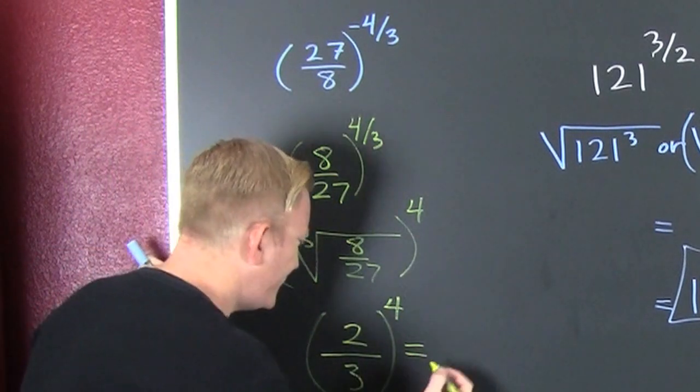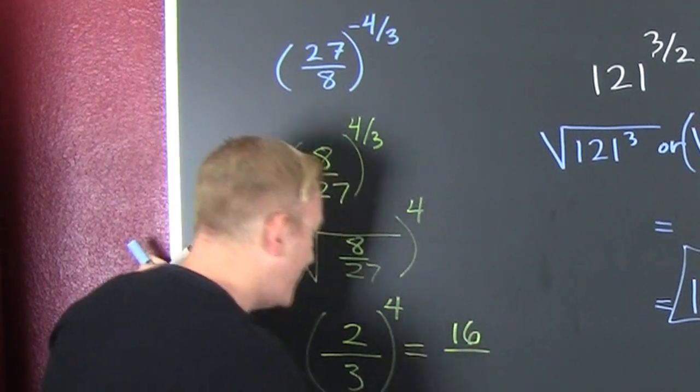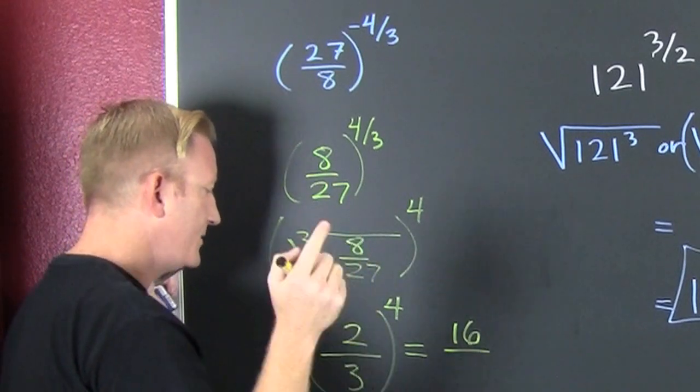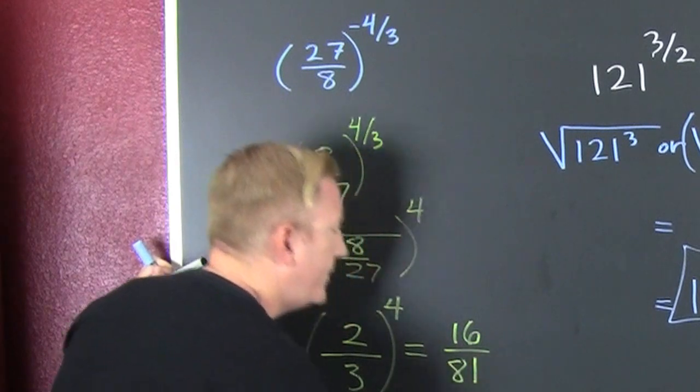And then, that's all still to the 4th power. Finish him. Yeah! Finish him! 2 to the 4th, that's 16. 3 to the 4th? 3 times 3 is 9. Times 3 is 27. Times 3 is 81. Fun.